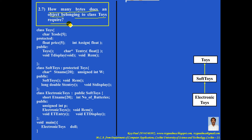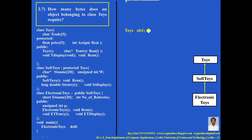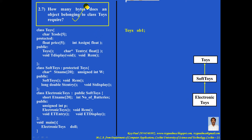How many bytes does an object belonging to class Toys require? If a question comes connected with size, and you declare an object of the class Toys — say OB1 is an object of the class Toys — what is the size of this object? First, you need to draw the figure. We will start answering the question only after drawing the figure. Second, calculate the size of each and every class separately. After that, you can answer the question connected with size.